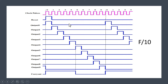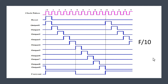Though their duty cycle is not 50%, they are clock signals because they are periodic. Their frequency is f/10, where f is the input clock frequency. Whatever waveform you are seeing here is the default behavior of the chip acting as a decade counter.